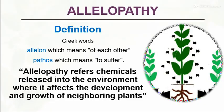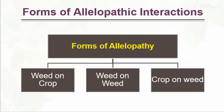Allelopathy is a Greek word. 'Allelo' means 'of each other' and 'pathos' means 'to suffer.' The definition of Allelopathy is: Allelopathy refers to chemicals released into the environment where it affects the development and growth of neighboring plants. That means the detrimental effect of one plant on another plant is called Allelopathy.